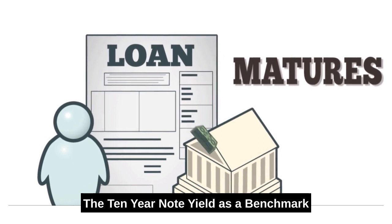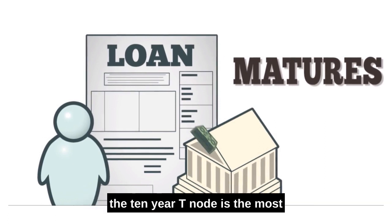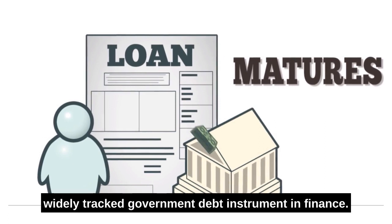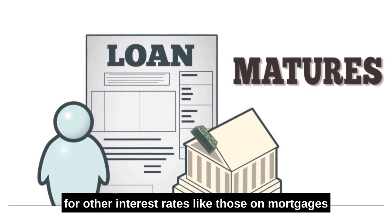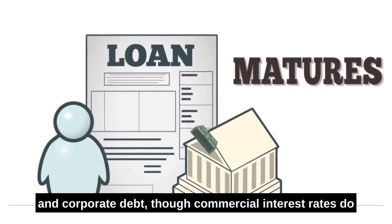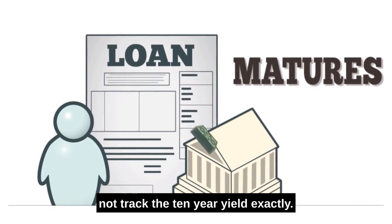The 10-year Note Yield as a Benchmark. The 10-year T-note is the most widely tracked government debt instrument in finance. Its yield is often used as a benchmark for other interest rates, like those on mortgages and corporate debt, though commercial interest rates do not track the 10-year yield exactly.